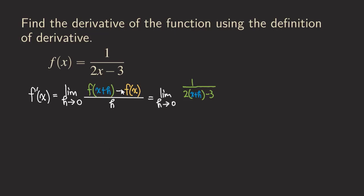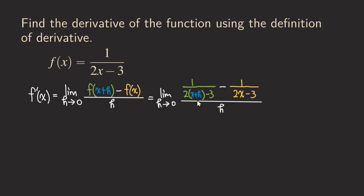The first function is one over two blank minus three, and what we fill inside the blank is x plus h. Then we put the minus sign for the numerator, and the second function, which is just the original f of x, is one over two x minus three. That's our numerator, and the denominator is just h. Now we need to evaluate this limit, and we cannot directly plug in zero for h because we get zero over zero.